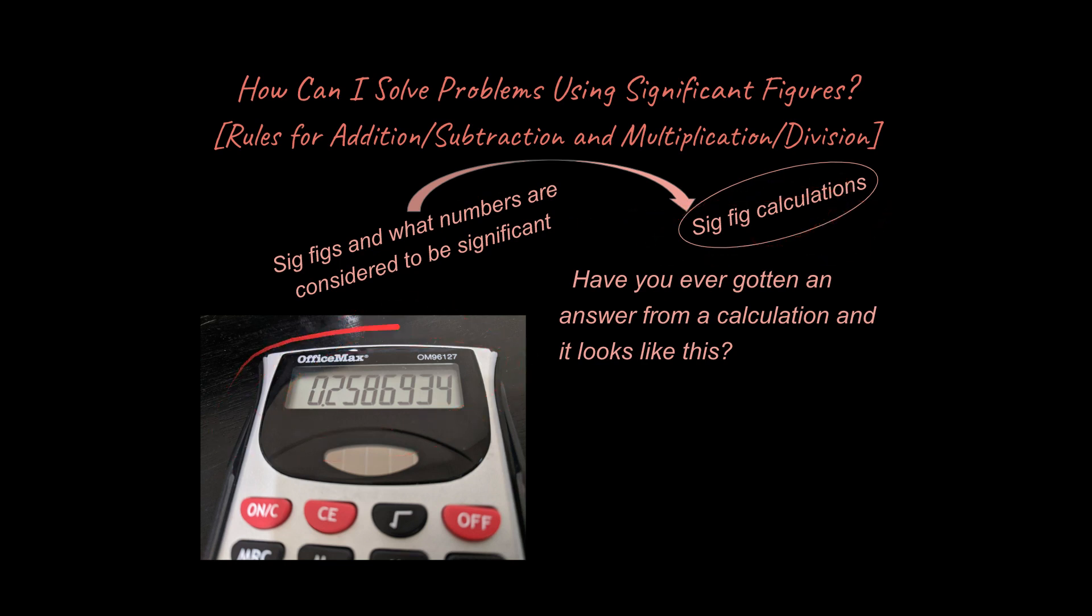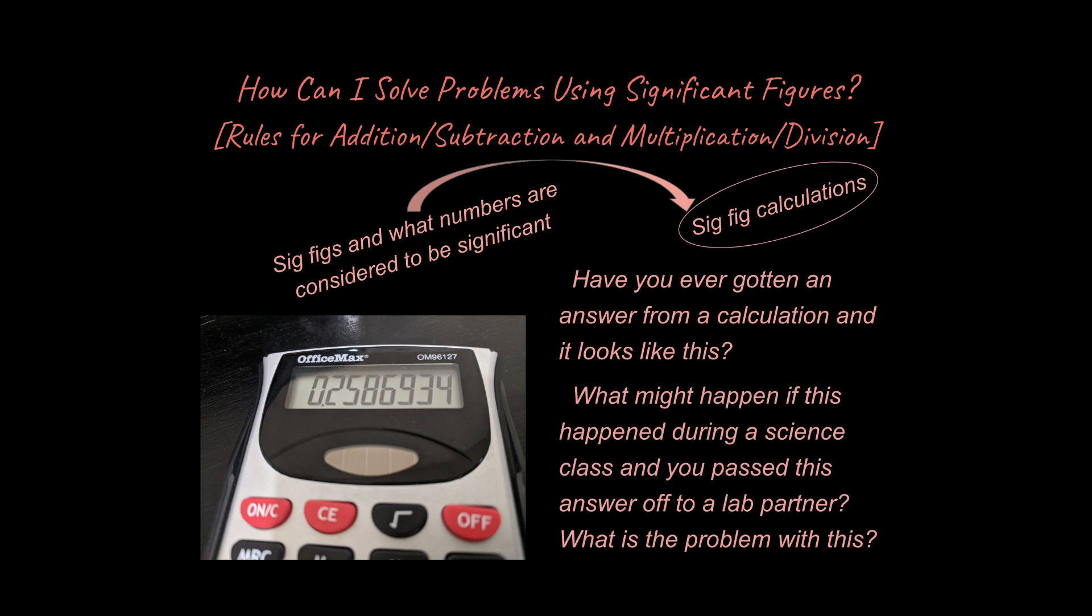But I do want to start off by asking you a question. Have you ever gotten an answer from a calculation and it looks something like this? Almost certainly you have. You've done a calculation. Notice that you can get numbers with many digits to the right of the decimal place. And that's what I have shown here. And the follow-up question I have is essentially would this be a problem if you were to report this as your answer.